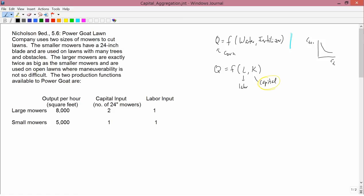and then it's listed here, Large mowers have 8,000 square feet of output per hour, with two 24-inch mowers as the capital input and one unit of labor input. And the smaller mowers use one unit of labor, one unit of capital, and produce 5,000 square feet.